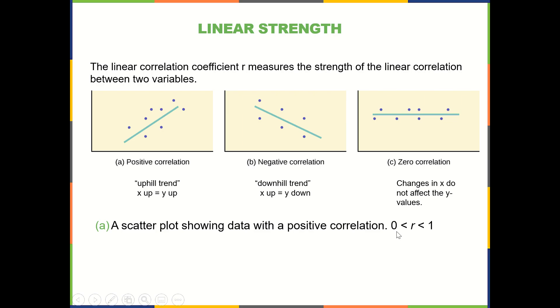And negative 1 would be negative correlation, perfect linear correlation to the negative, with a negative slope. And then we have the 0 in the middle.